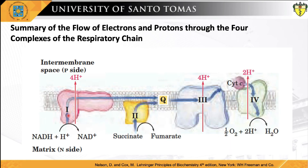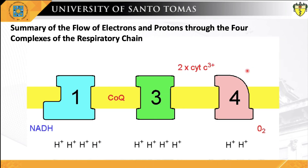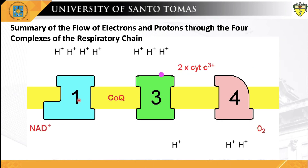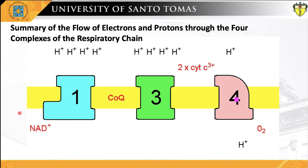A summary of the flow of electrons and protons through the four complexes: electrons reach ubiquinone through Complexes I and II. Ubiquinol serves as a mobile carrier of electrons and protons, passing electrons to Complex III, which passes them to cytochrome c — another mobile connecting link. Complex IV transfers electrons from reduced cytochrome c to oxygen. Electron flow through Complexes I, III, and IV is accompanied by proton flow from the matrix to the intermembrane space.